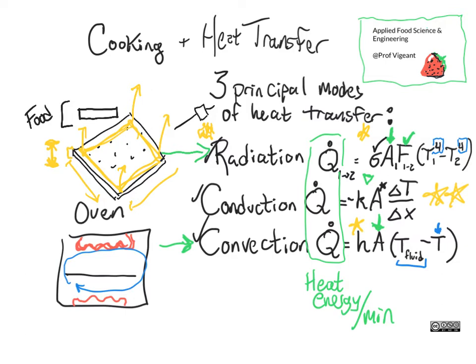Now we can look at the conduction heat transfer equation: we have a constant K, and we have a difference between the temperature where energy is moving from — perhaps the cookie sheet or the outside edge of the cracker — and the temperature where the energy is moving to, which would be the interior of the cracker. That temperature difference is over the distance, which is probably the thickness of the cracker.